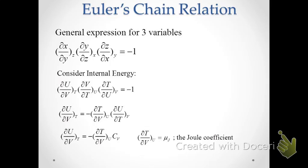The partial derivative dT/dV at constant U is actually given a name: the Joule coefficient, represented by the Greek character μ with a J subscript, named after James Joule and an experiment he conducted — which we'll be discussing in a later video — in which he attempted to measure dT/dV at constant U.